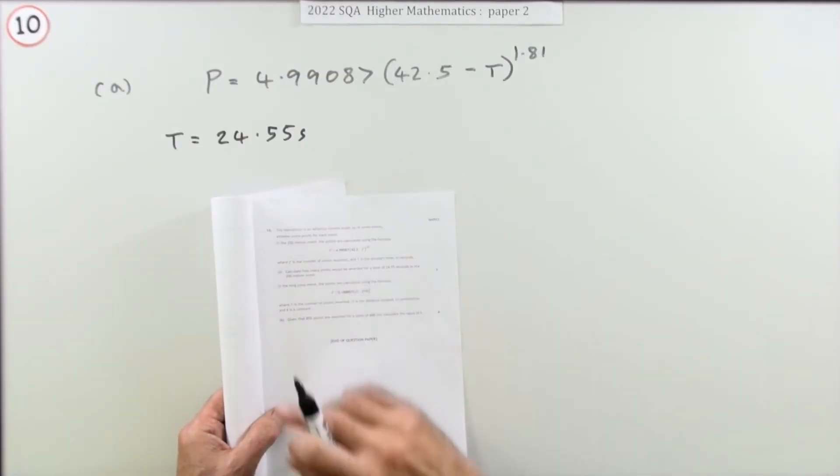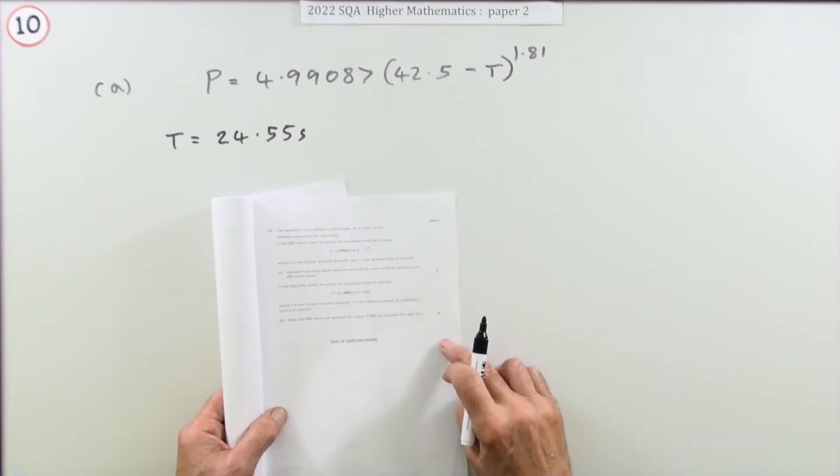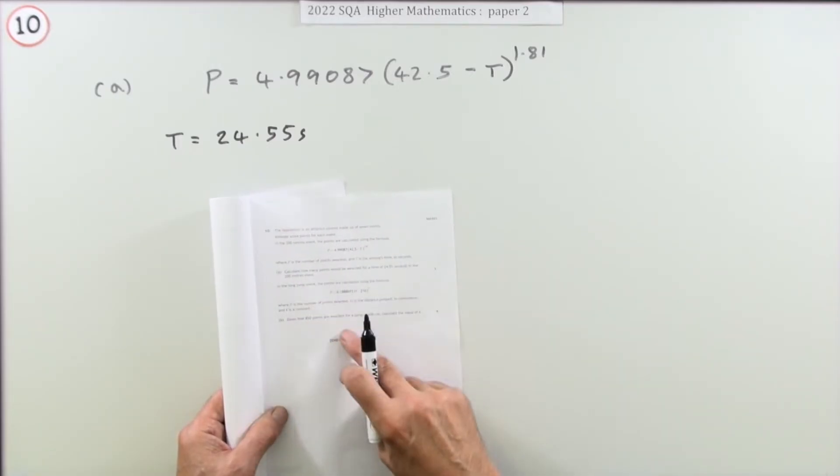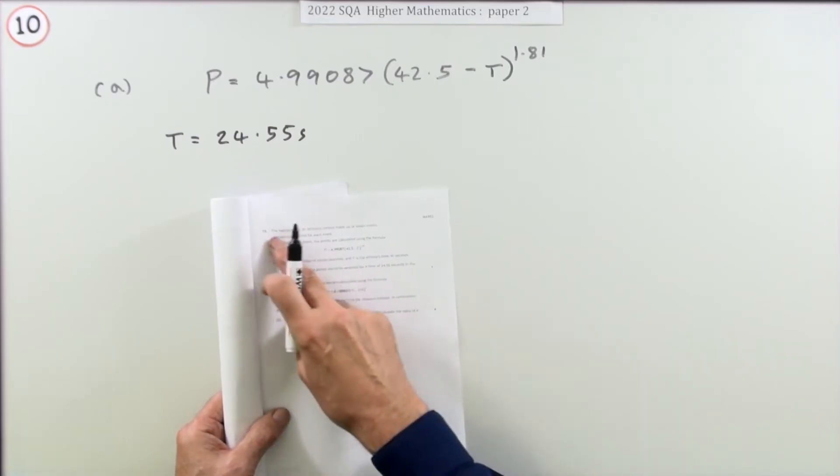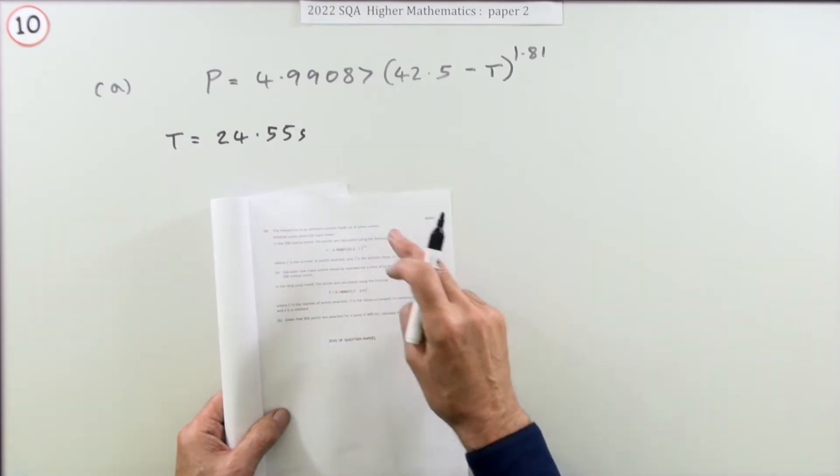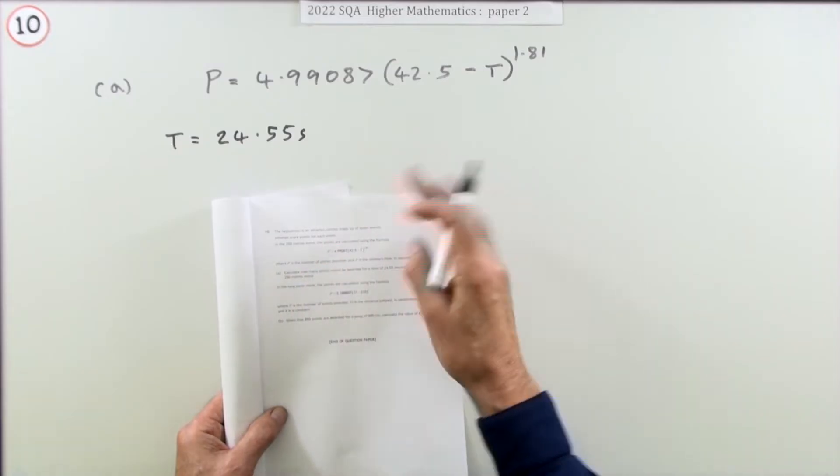Question 10, the last question from the 2022 Higher Maths Paper 2, is a 5-mark question about exponentials. These exponential equations relate to the heptathlon, a contest made up of several events. You get scores for each event depending on your performance.